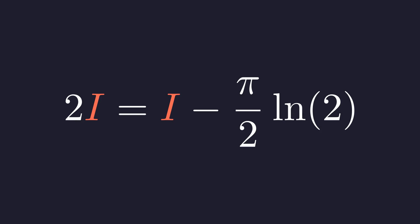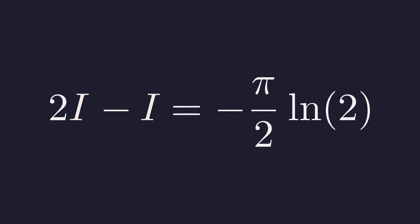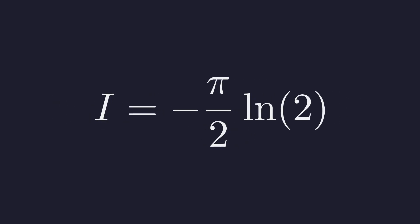We subtract i from both sides. This isolates i on the left side of the equation. And we are left with the stunning final result.